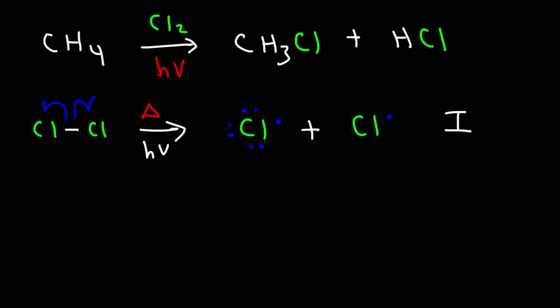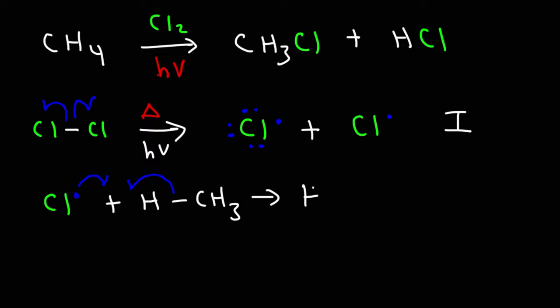Once we have our chlorine radical, chlorine can then react with methane. One electron from chlorine will be used to form a bond between H and Cl, and one electron from the carbon-hydrogen bond will also be used to create that bond, giving us hydrochloric acid. The other electron goes back to carbon, giving us a methyl radical. This step has a radical on the left and one on the right — so it's a propagation step.